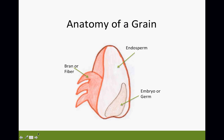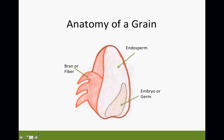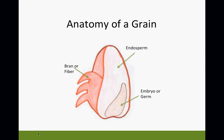Remember the last time we were here, we actually ended on this screen, but I'm going back one screen to start at the anatomy of a grain. In starting with the anatomy of a grain, there are some basic principles you need to keep in mind. Remember that a grain consists of three basic parts: the bran, the endosperm, and the germ.